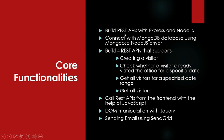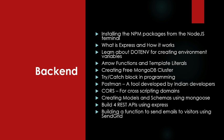The core functionalities include: build REST API with Express and Node.js, connect with MongoDB database with the help of the Mongoose Node.js driver, and build 4 REST APIs — creating a visitor, checking whether a visitor already visited the office for a specific date, getting all visitors for a specific date range, and getting all visitors. You will also know how to call REST APIs from the front-end with the help of JavaScript, DOM manipulation with jQuery, and sending email using SendGrid.